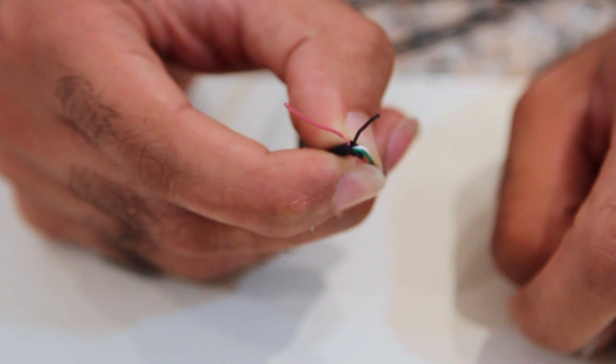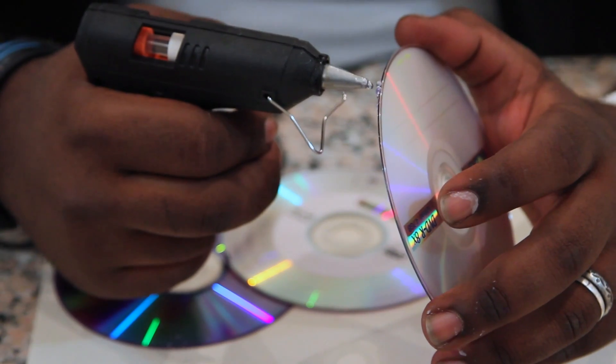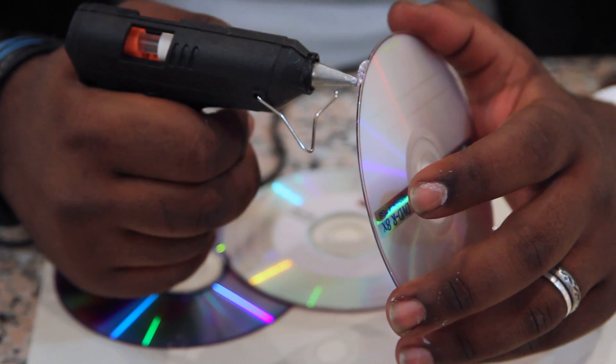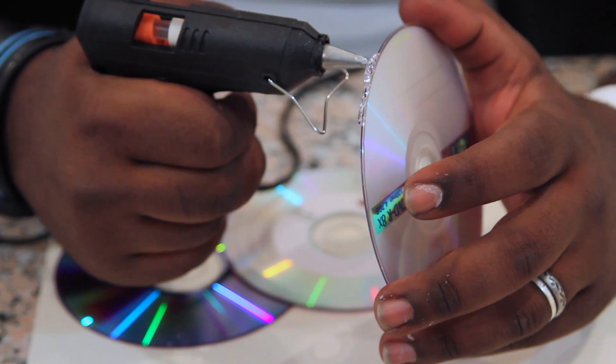Number seven is the glue gun. We need a triple of comeback discs. Grab your discs that you want to use, go ahead and grab hot glue on it and let it look like a pyramid structure.